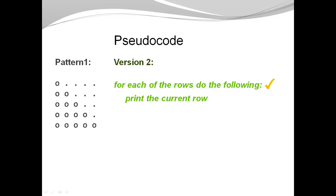If that is not obvious, please check out the videos about for loop. Now I'm focusing on the second part. Print the current row. Now I want to break down this problem into smaller tasks.